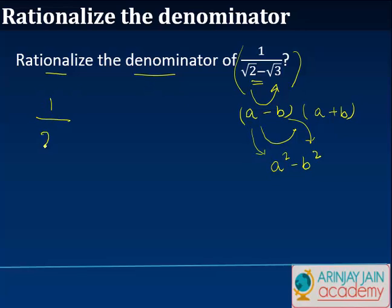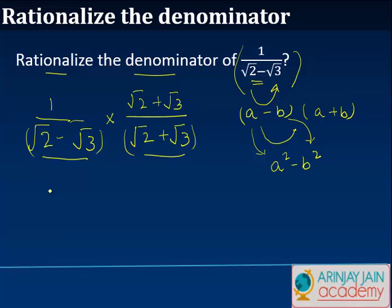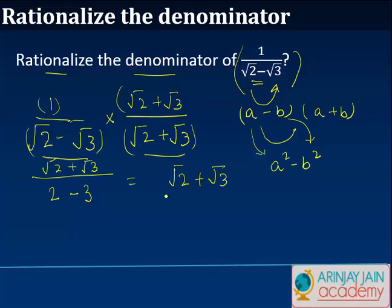So I write this as 1 divided by (root 2 minus root 3), multiplied by (root 2 plus root 3) divided by (root 2 plus root 3). I have a minus b times a plus b, which gives me a squared — which is root 2 squared, or 2 — minus b squared, which is root 3 squared, which is 3. So the denominator is 2 minus 3, which equals minus 1. And on the numerator side, I get 1 times (root 2 plus root 3). So I get root 2 plus root 3 divided by minus 1, or I can simply write it as minus (root 2 plus root 3).